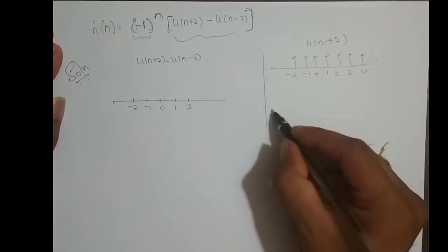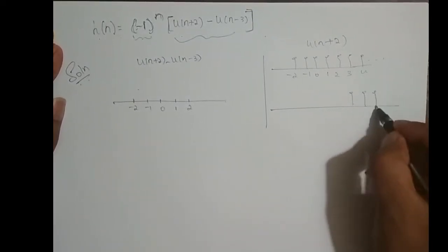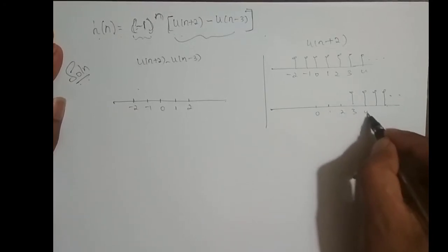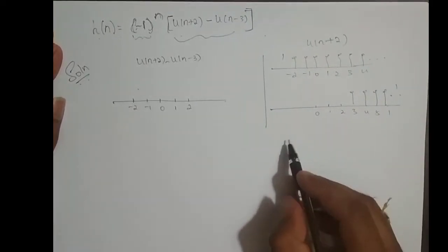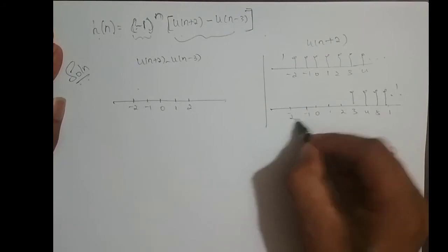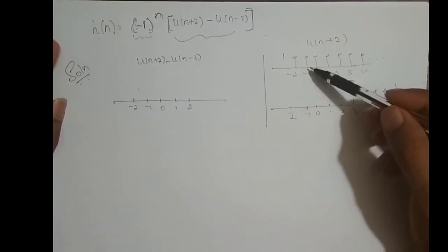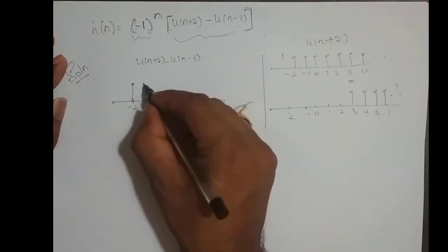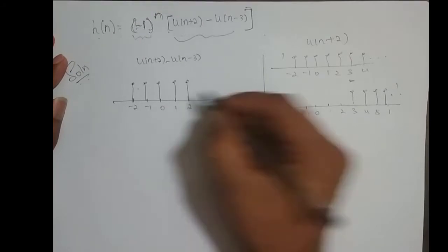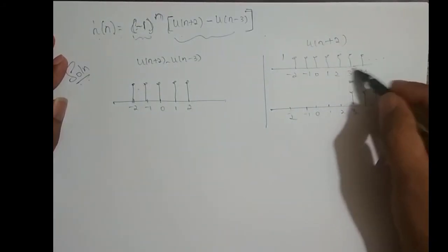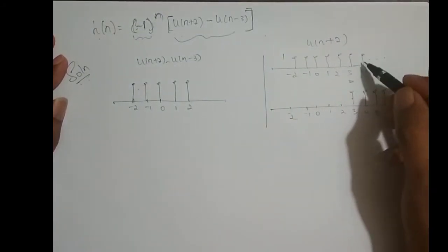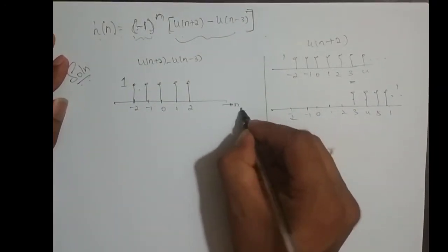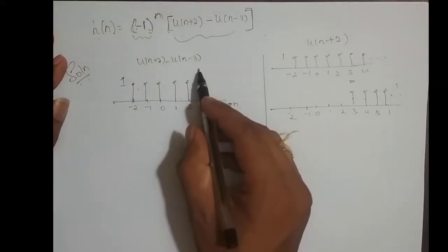And how does u(n-3) look? It is u(n) shifted right 3 times — so values at 0, 1, 2, 3, 4, 5 are all 1. If I subtract these two signals: at minus 2 it is 1, minus 1 it is 1, at 0 it is 1, at 1 it is 1, at 2 it is 1. At 3 it goes to 0, since 1 minus 1 is 0, and this is 0 forever. So this is u(n+2) minus u(n-3).